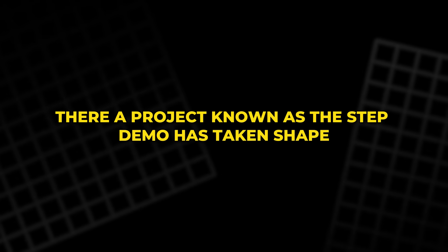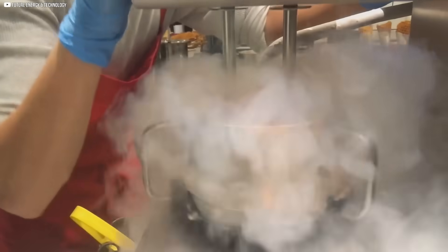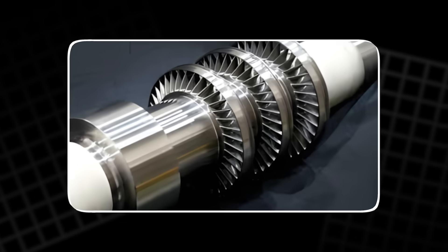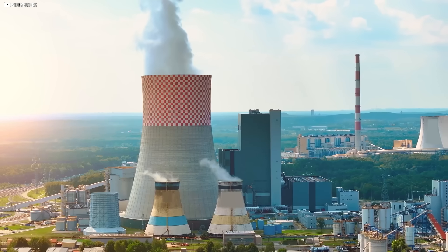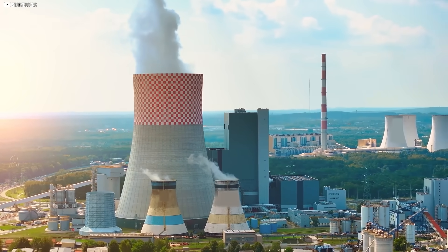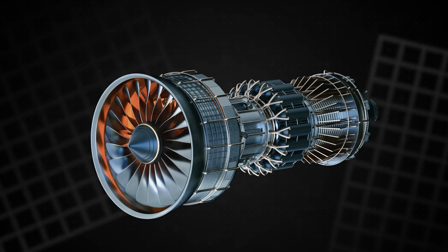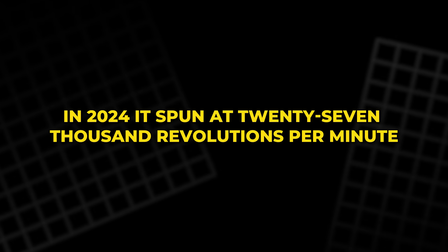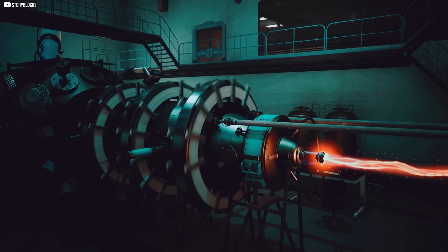But the most striking example is in Texas. There, a project known as the STEP demo has taken shape. Backed by major energy partners and the U.S. Department of Energy, this facility is designed to prove that the idea can scale. The plant carries a price tag of more than $100 million, yet its turbine is small enough to fit on an ordinary countertop. In 2024, it spun at 27,000 revolutions per minute, creating 4 megawatts of power.